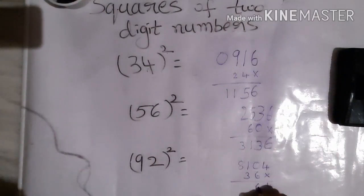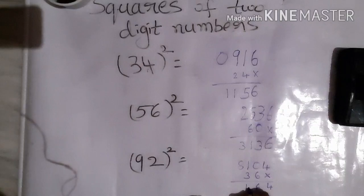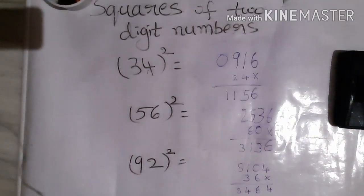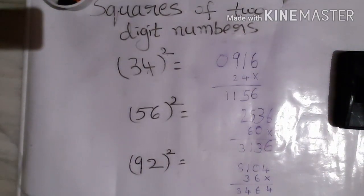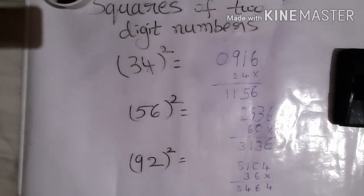4, 6...4, 8. See the simple shortcut way for squares of two-digit numbers. Bye!